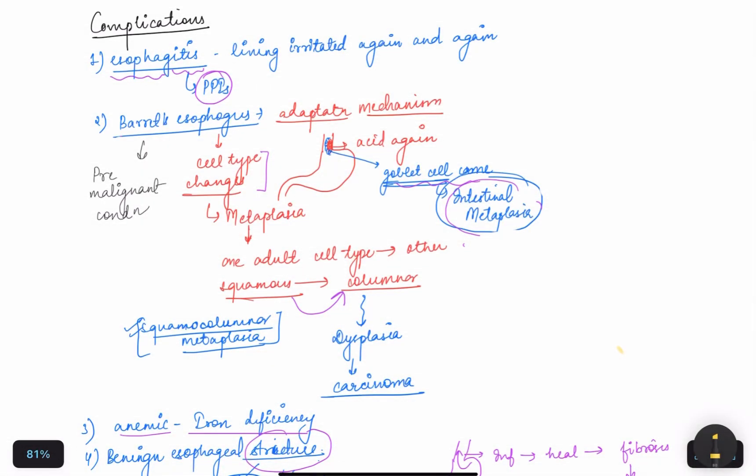Hello everyone, welcome back to my channel. Today we are going to study the complications of the gut. The first complication is esophagitis. The word itself indicates when the lining of the esophagus is irritated by acid again and again, so inflammation of the esophagus takes place, also called esophagitis. Second, we have Barrett's esophagus.